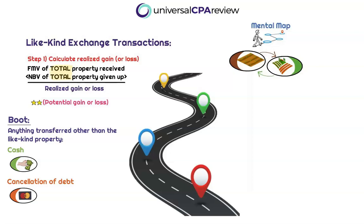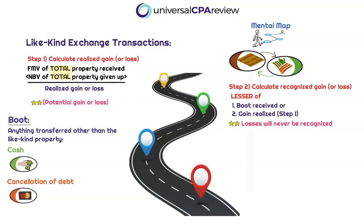That's step one — calculating our realized gains or losses, which we consider our potential gain or loss, sometimes called the 'what if' gain or loss. Not all of this is necessarily getting recognized today, so how do we know how much is getting recognized today? That leads us right into step two, which is calculating the recognized gain or loss. This is always going to be calculated as the lesser of boot received or the gain realized from step one.